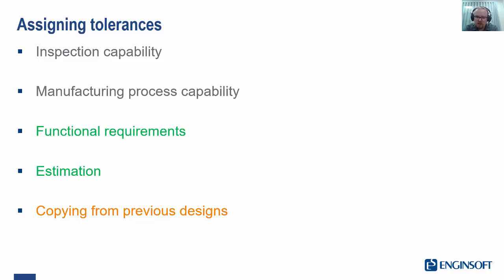Copying from previous designs. This is often done but rarely the best thing to do. If our design process is highly iterative this can be okay, but otherwise it's usually best to revisit our functional requirements. This can be the source of many quality issues if due consideration is not given to setting our tolerances.